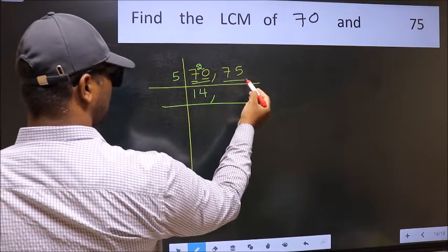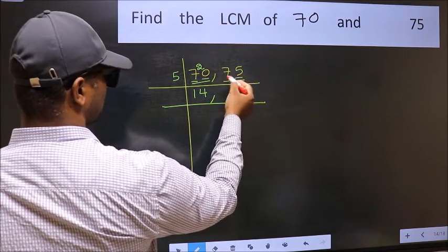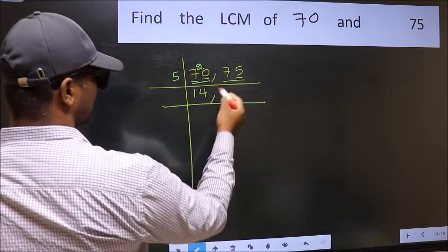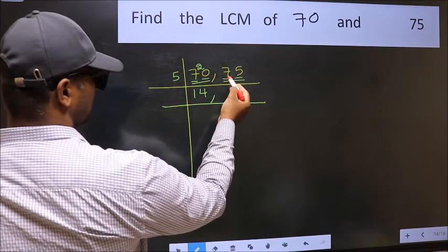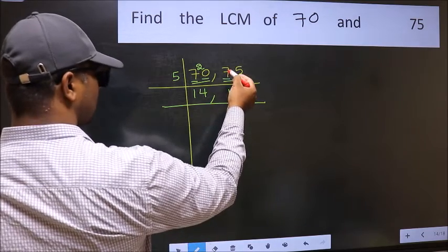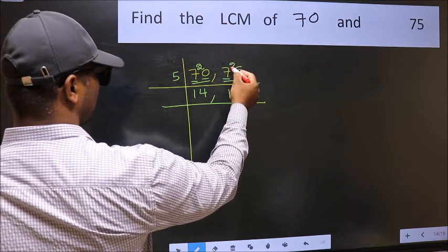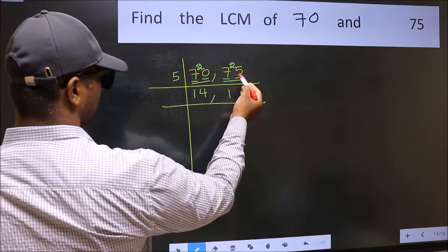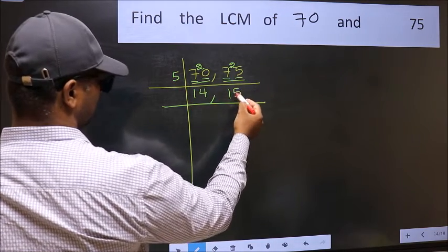The other number 75, last digit is 5 so this number is divisible by 5. First number is 7. A number close to 7 in the 5 table is 5 once 5. 7 minus 5 is 2, 2 carried forward 25. When do we get 25 in the 5 table? 5 fives is 25.